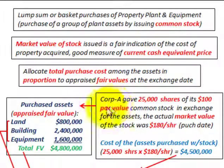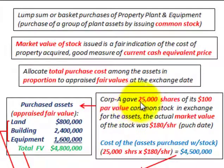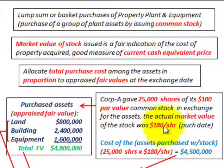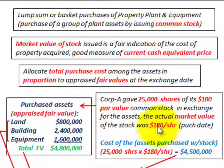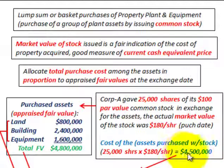In our example, Corporation A is going to buy some assets and pay a lump sum price for land, building, and equipment from another company. Corporation A gave the other company 25,000 shares of its $100 par value common stock in exchange for the assets. The actual market value of the stock is $180 per share at the purchase date — an established price on the stock exchange. So the cost of the assets purchased is 25,000 shares times $180 per share, which equals $4,500,000. That is the cost of the assets, established based on the market value of the stock issued.